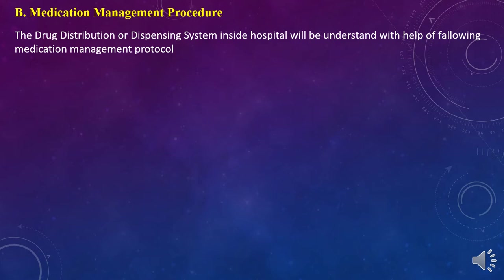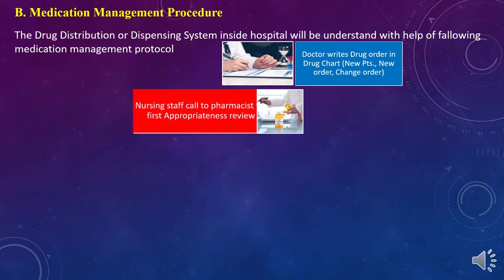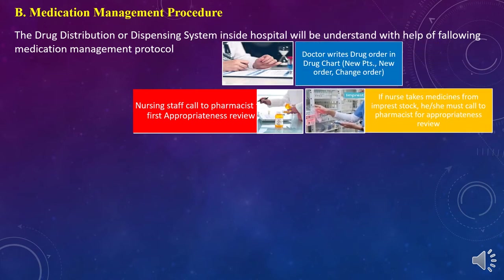The overall healthcare system is utilized to operate these five components. In the first step, the doctor writes a drug order in a drug chart — either a new order or a change in order. This drug chart is then handed over to the nursing staff. The nursing staff calls the pharmacist for the first appropriateness review. If nurses utilize medicines from their drug basket or floor stock, they must call the pharmacist for an appropriateness review before using this medication.